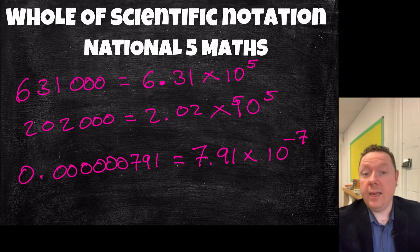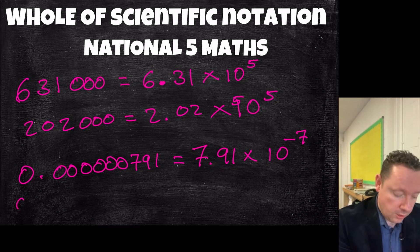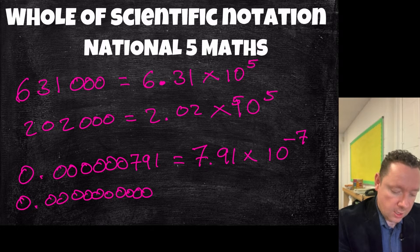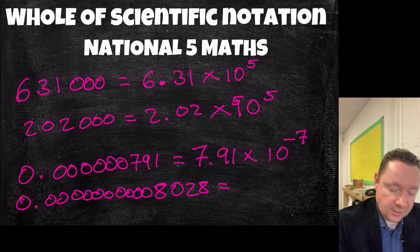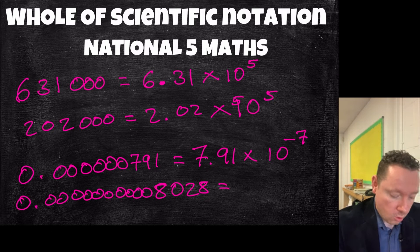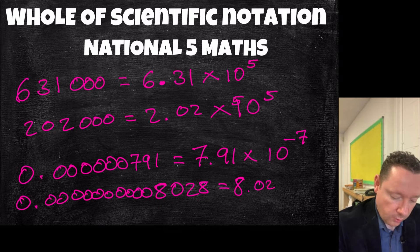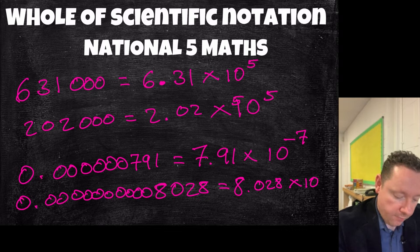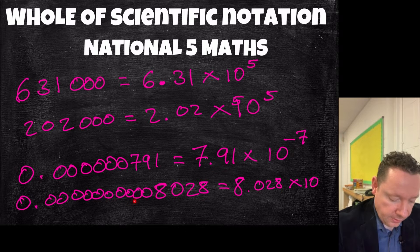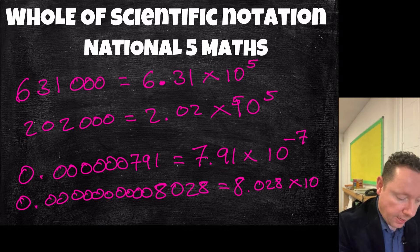Let's do it the quick way again with another small number: 0.000000000082 — that would be 8.028 times 10 to the power of — counting the zeros: 1, 2, 3, 4, 5, 6, 7, 8, 9, 10, 11 — so it's minus 11.